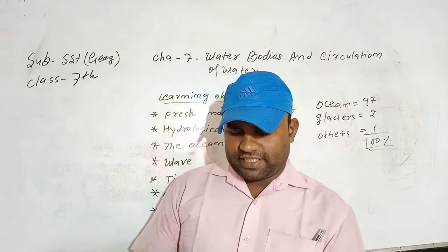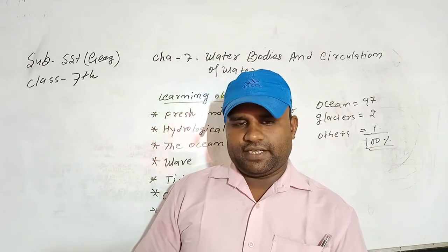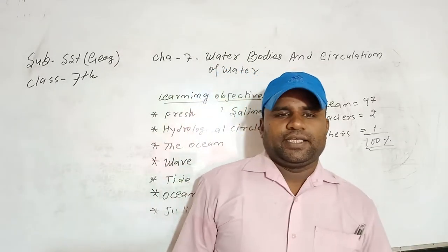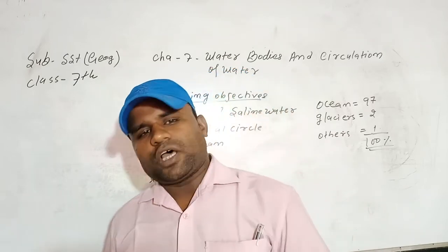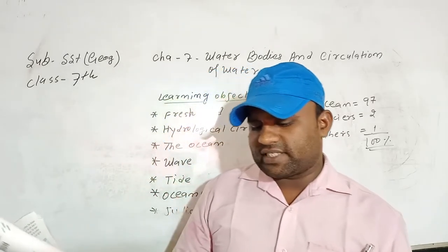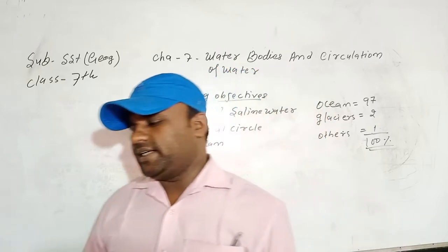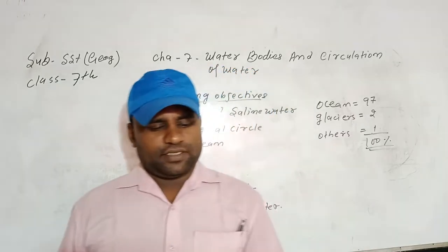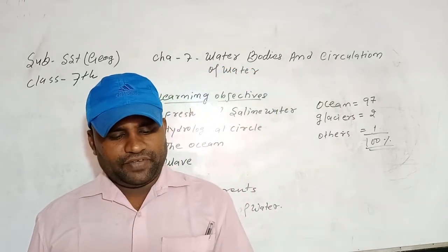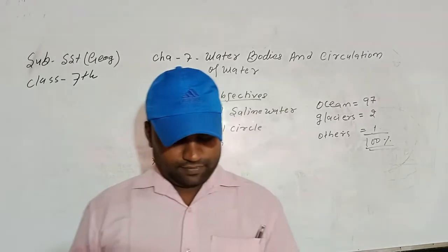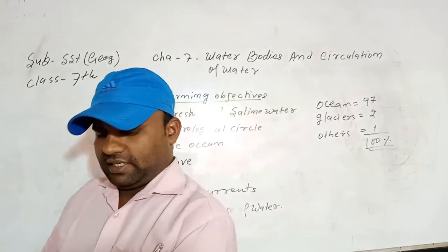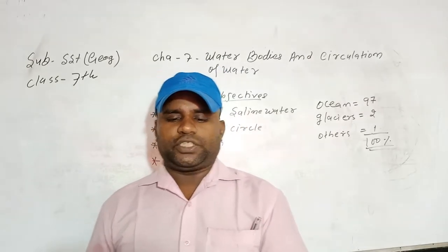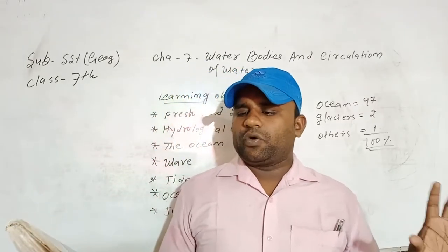Next, Indian Ocean. Students, it is the only ocean named after any country. So just mind it, this question can be asked, which ocean is named after a country? Now this ocean is known as the Indian Ocean. It covers 14.4% of the earth's surface. The Indian Ocean is surrounded by Africa in the west, Asia in the north and Australia in the east.